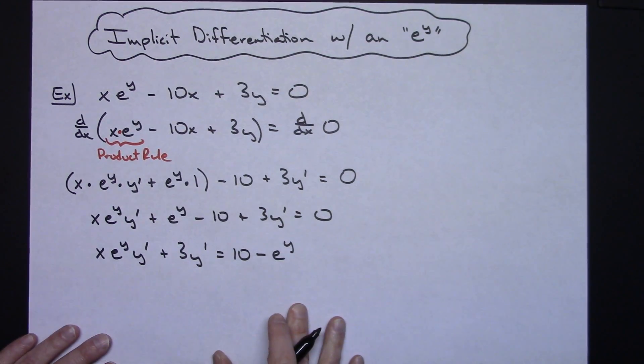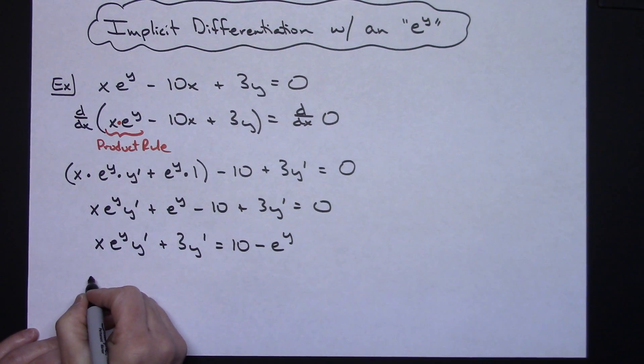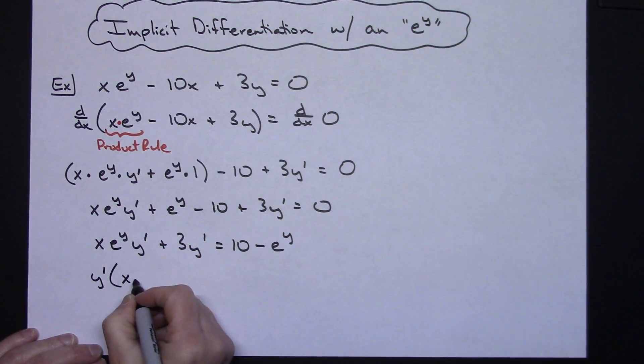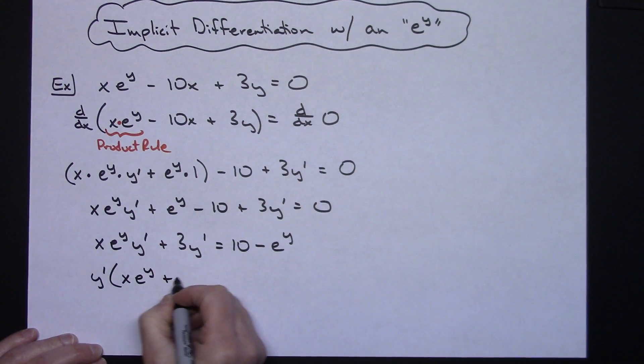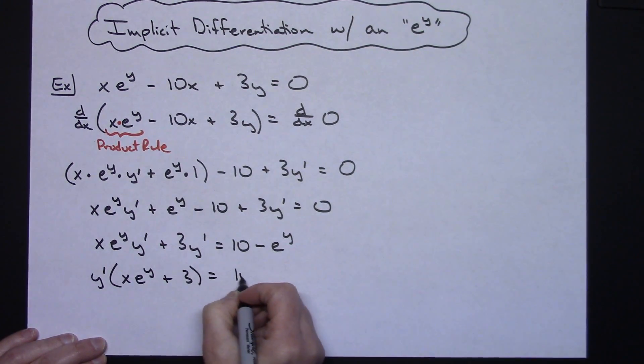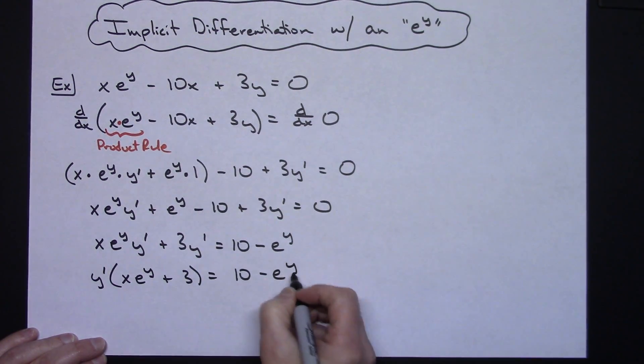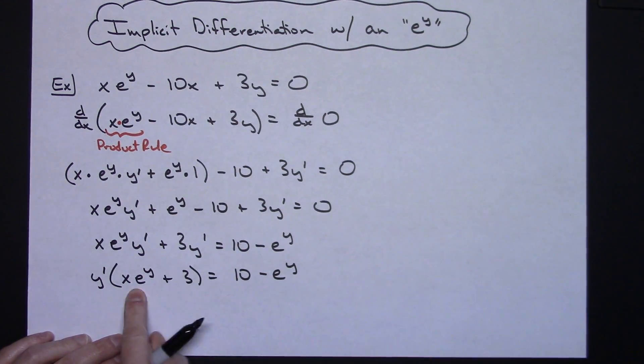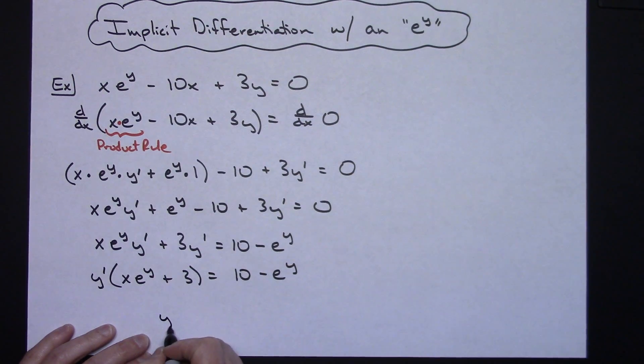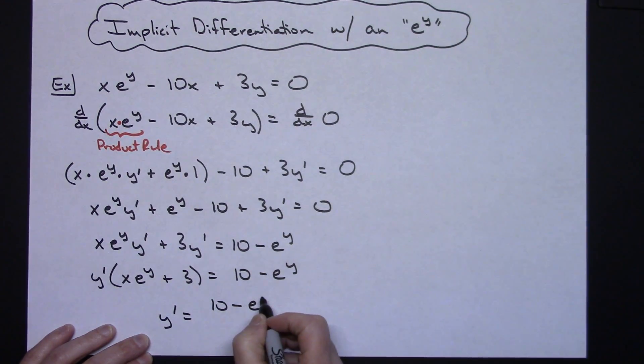On this side, I'm going to want to factor out that y prime. Factoring out y prime, that's going to leave me with an x e to the y plus 3. The right-hand side is not going to change. Now I can divide both sides of the equation by x e to the y plus 3, giving me a final answer of y prime equals 10 minus e raised to the y, all over x e to the y plus 3.